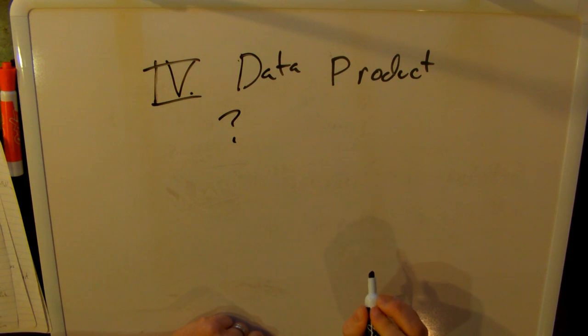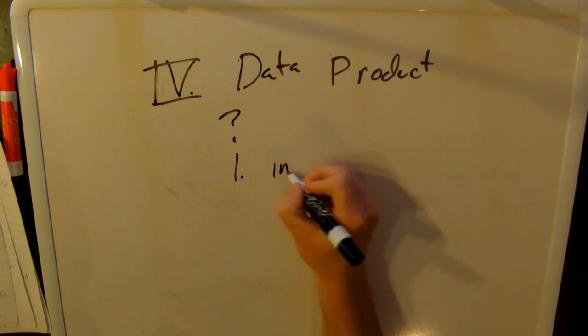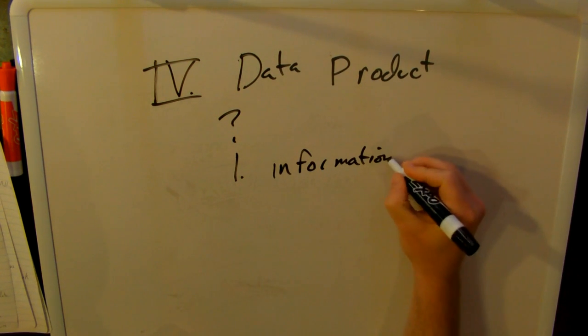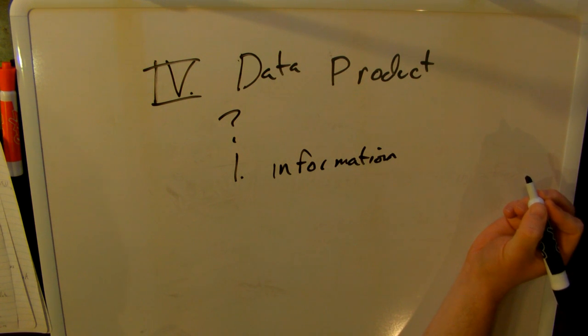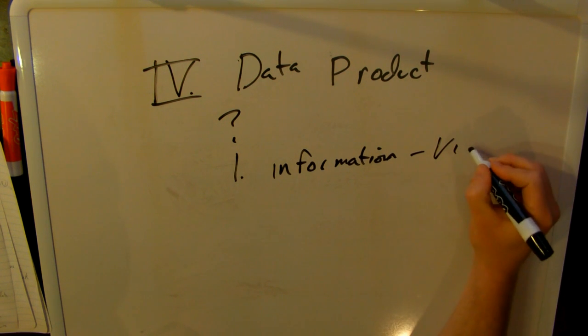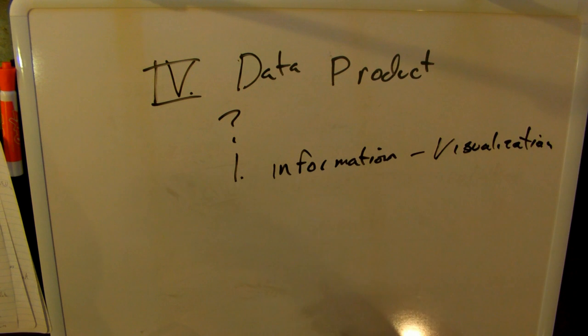So what's a data product? Well, a data product is, it's going to be whatever we build out of the data. It's the product of our work. It's how we show or convince or help the people that hired us. And so it could be a couple of things. The first thing it could be is just information. So maybe we use the information that we learned and we build some visualization.